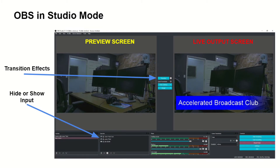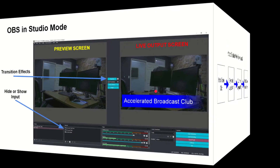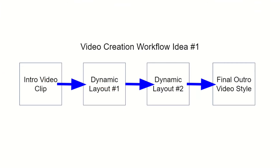We talked about OBS in Studio Mode, but we're going to demonstrate it with just a single video in the middle to keep it simple. At a high level, what I'm going to teach you is to create a video with multiple scenes. Scene one is an intro video clip that I'll create in this video. Then we'll create a dynamic layout — webcam on the left, PowerPoint on the right — then transition to a second dynamic layout, and finish with an outro webcam scene.